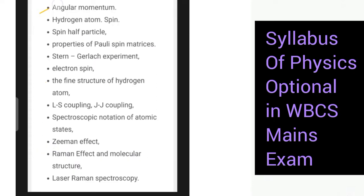Then we have this portion on angular momentum, hydrogen atom, spin. Then spin-half particle, properties of Pauli spin matrices, Stern-Gerlach experiment, electron spin. Fine structure of hydrogen atom, LS coupling, JJ coupling, then spectroscopic notation of atomic states. Then Zeeman effect.